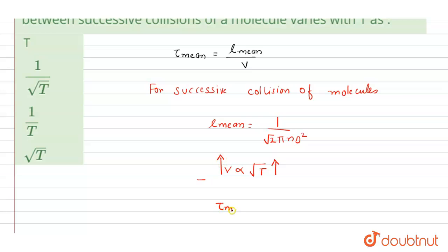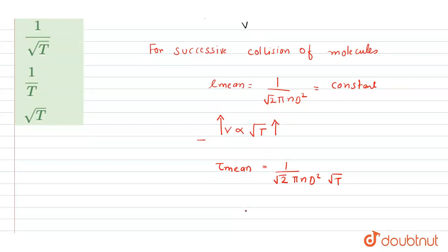So mean time will vary. This value is constant. Now it is clear, tau mean will be equals to 1 upon root 2 pi n d square and this value will be square root of temperature. From this equation it is clear.